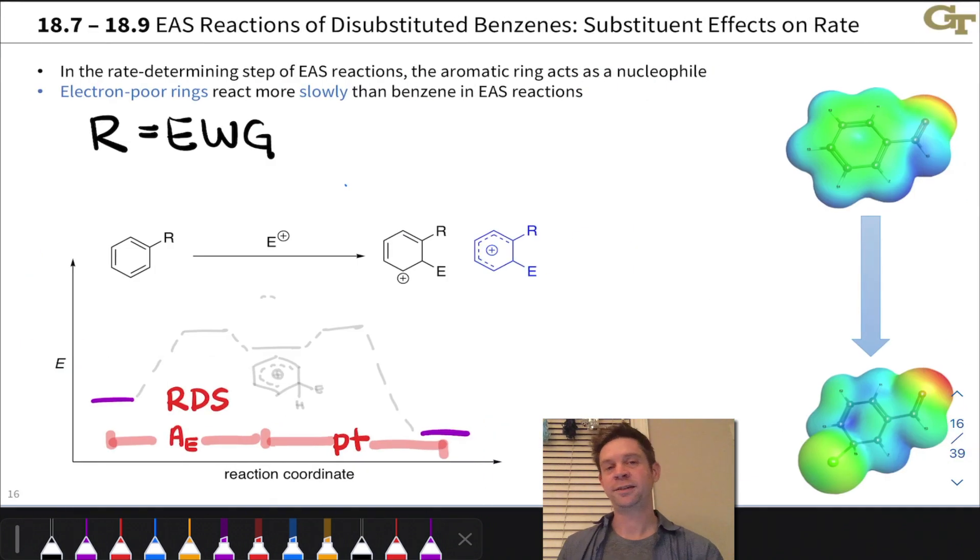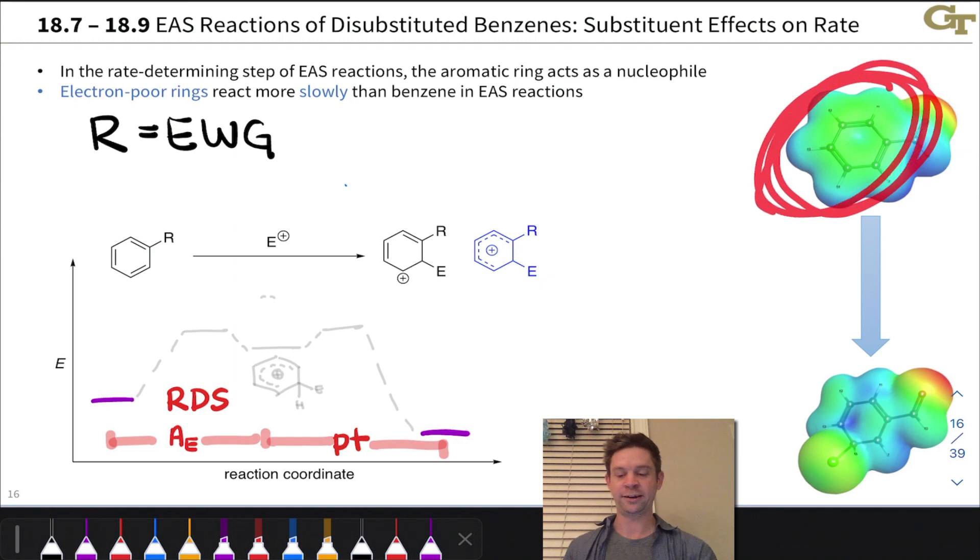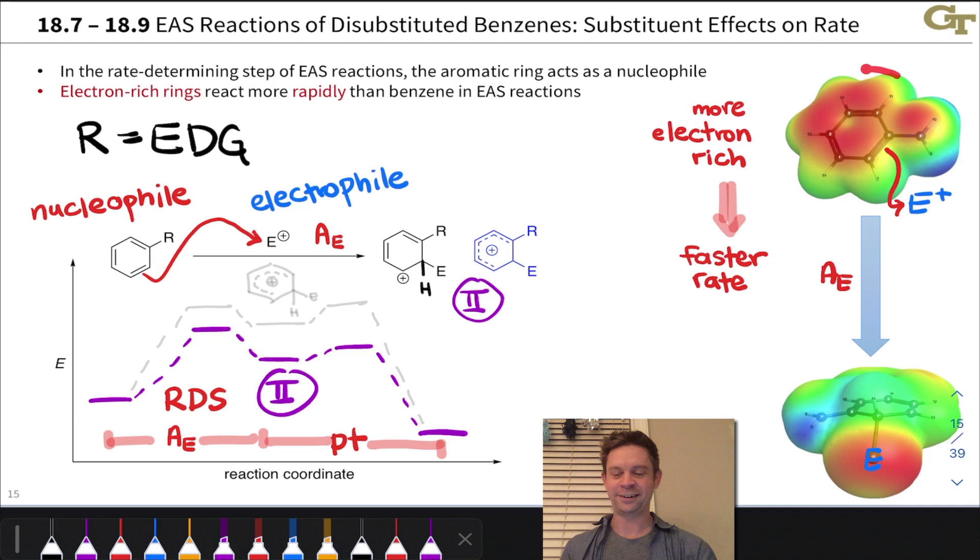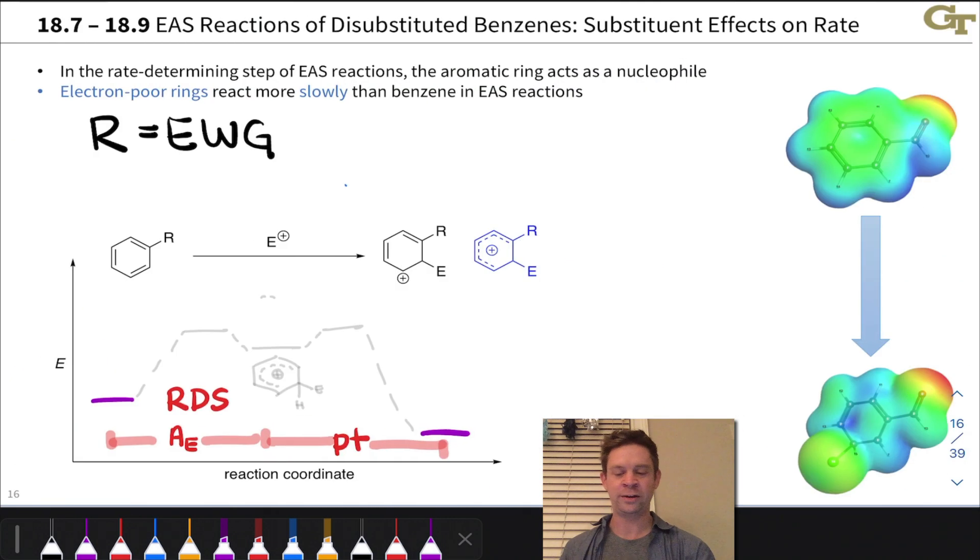Now let's consider the case where R is an electron-withdrawing group. Let's immediately contrast the electron density situation in the electron-poor benzene, like benzaldehyde, with the one in an electron-rich benzene like aminobenzene or aniline. There's a huge difference here. There's much, much lower electron density in the ring of this electron-withdrawing group substituted benzene.